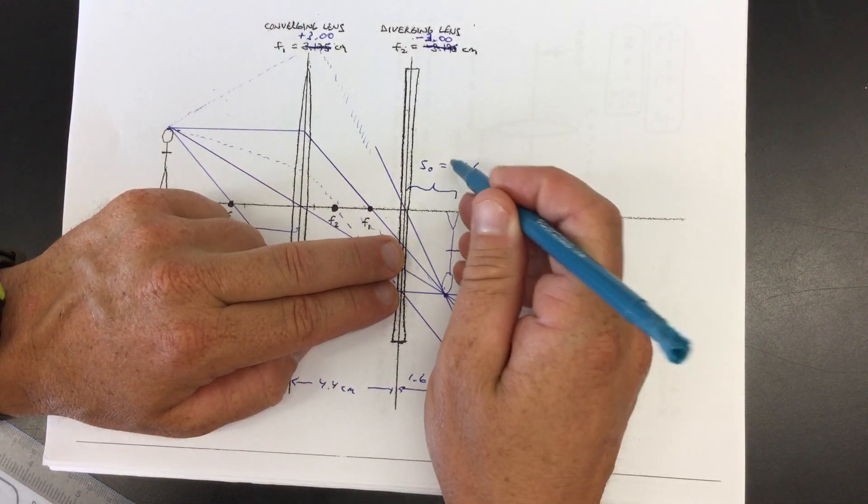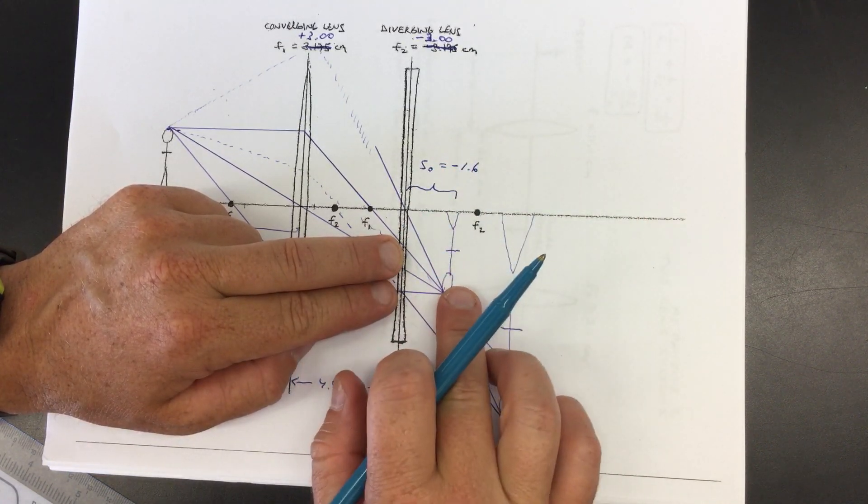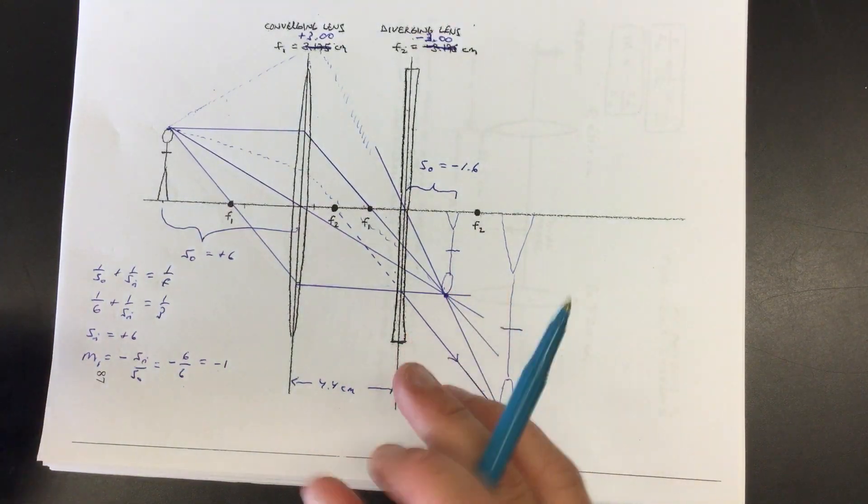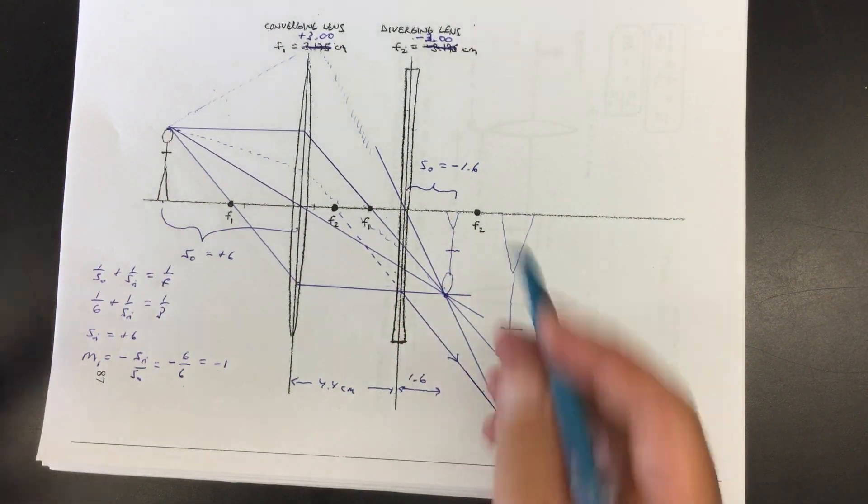Okay. So this is the most important part. This is why the object distance is negative because this is on the wrong side. Okay. So you may even want to replay that part of the video. Cause that's the toughest part. Now that we have that though, the rest of this will go pretty easily.